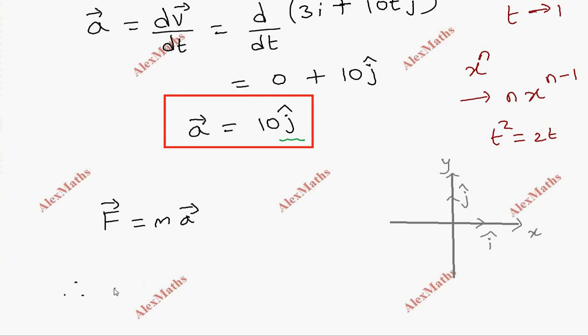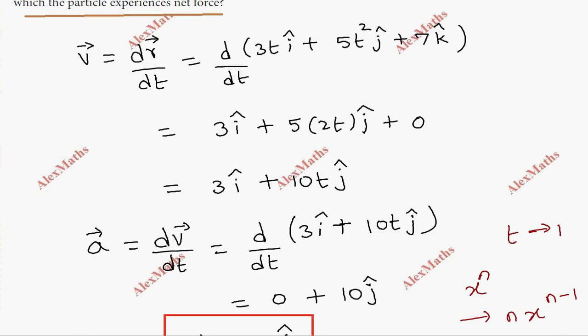Looking at the velocity: it has i cap and j cap components, but the k cap component is zero.